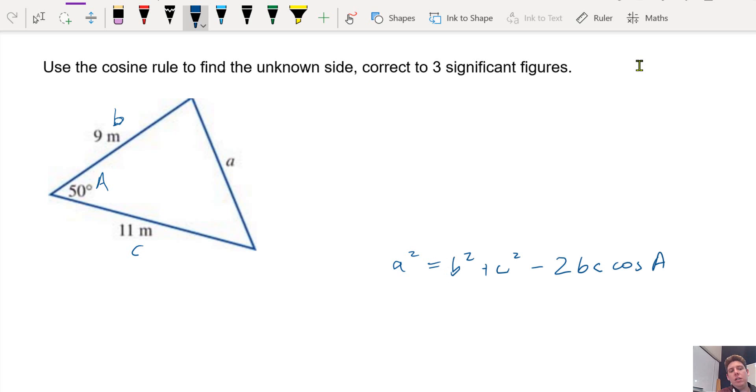So the cosine rule is a side squared, so the side next to the angle squared, plus side squared, also next to the angle, minus two times those sides multiplied times cos the angle in between the two sides, or the angle opposite the side that we don't know.